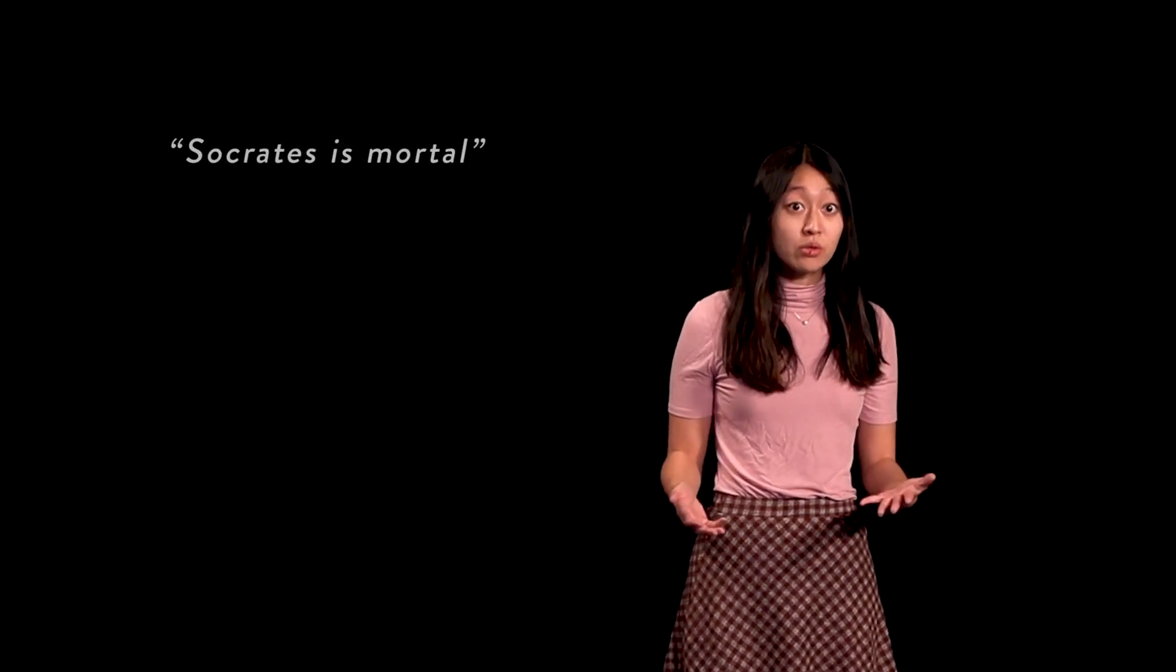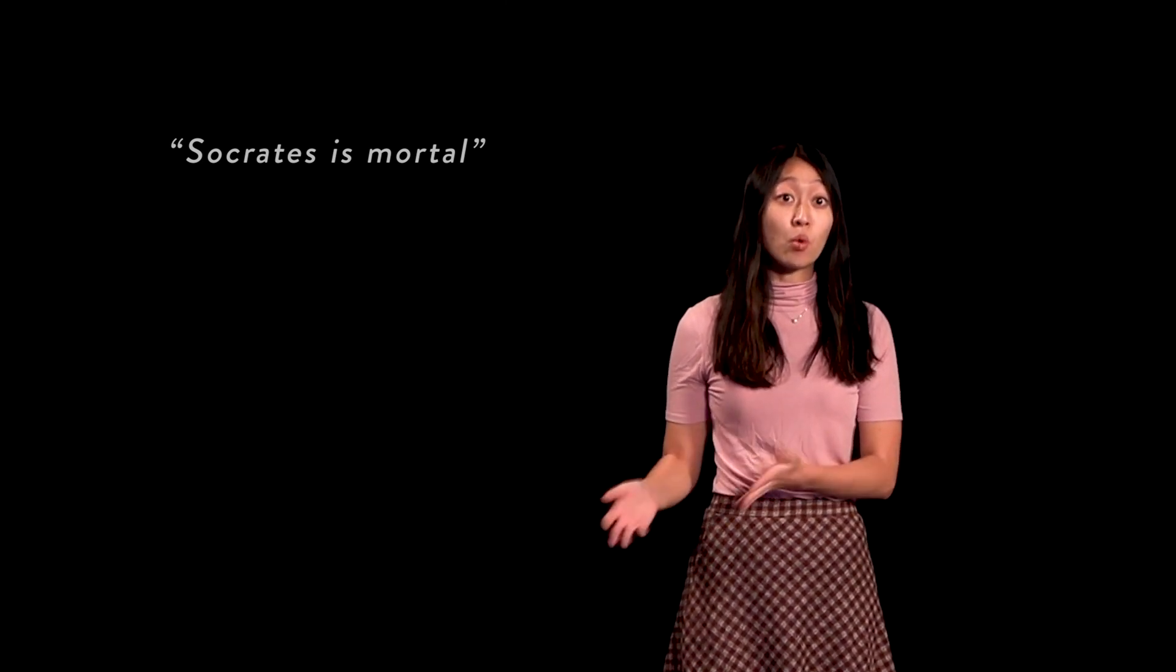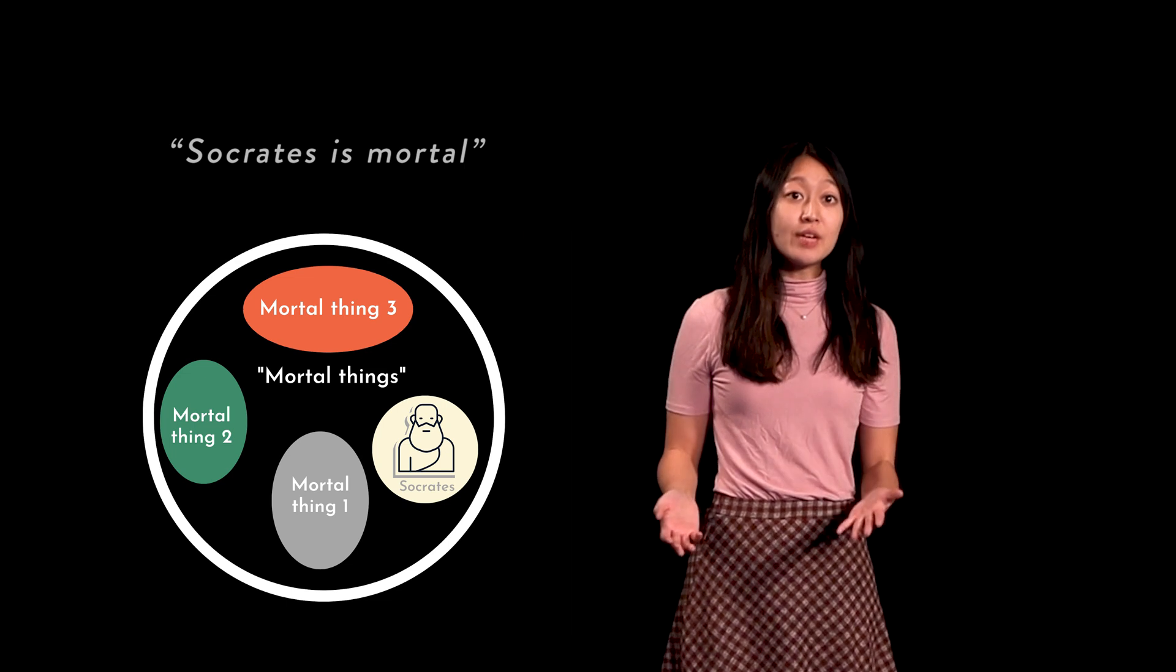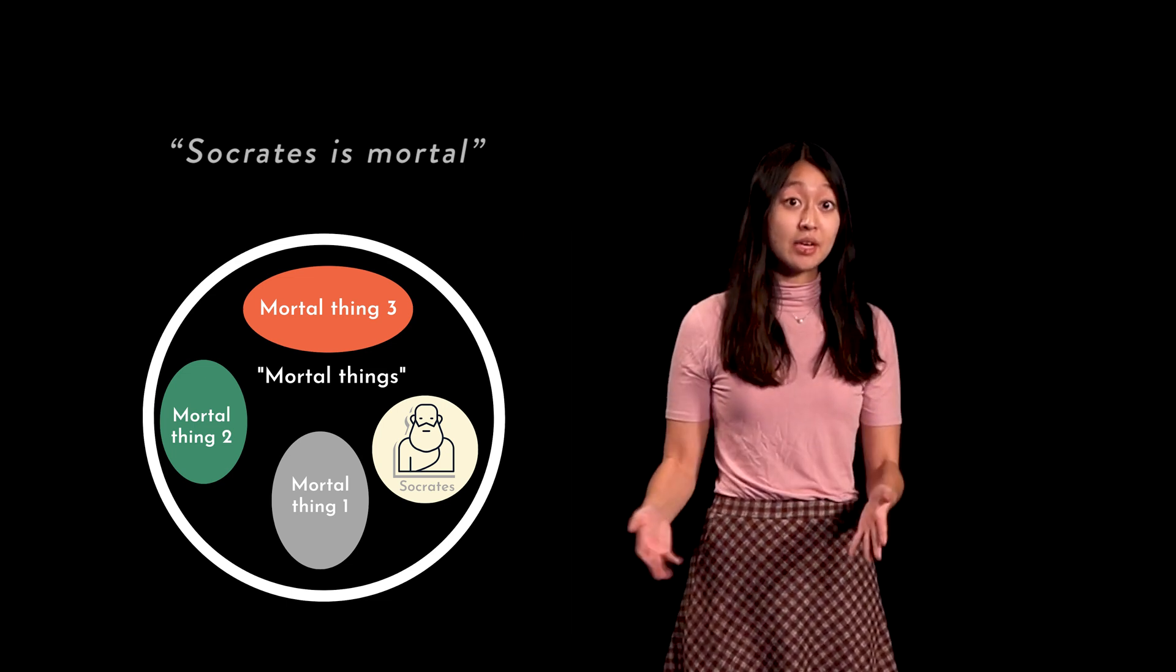Thus, when we say Socrates is mortal, we are saying that Socrates has the property of being mortal, which means that Socrates belongs to the category mortal things. Note that if this diagram was perfect, there would be many more things inside the category mortal things.